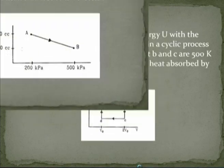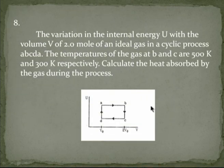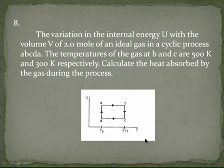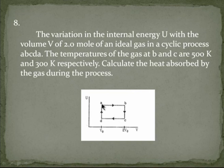Now another indicator diagram — so far we discussed indicator diagrams represented by pressure and volume. But this indicator diagram is represented by internal energy and volume. The process starts from A, goes to B, then C, then D, and back to A. Since it starts and ends at A, this process is a cyclic process.